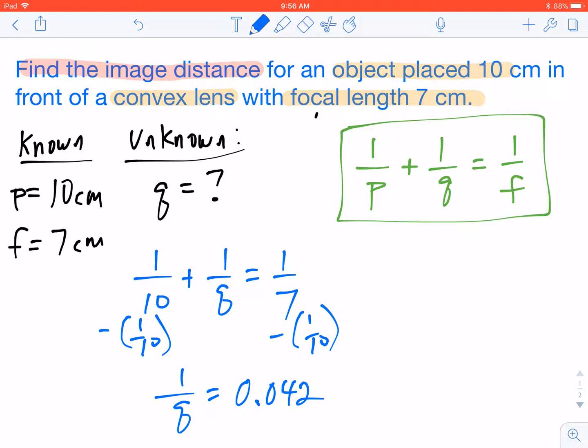Now a lot of students get tripped up here because they think, all right, I've got 1 over q all by itself. I've got a number. I've solved it correctly. Well, we have to keep in mind, we don't want 1 over q. We want q.